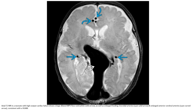CT angiogram with contrast in a neonate with high output cardiac failure shows a large dilated ampulla, as well as a large feeding choroidal artery and a large anterior cerebral artery, consistent with a vein of Galen aneurysmal malformation.